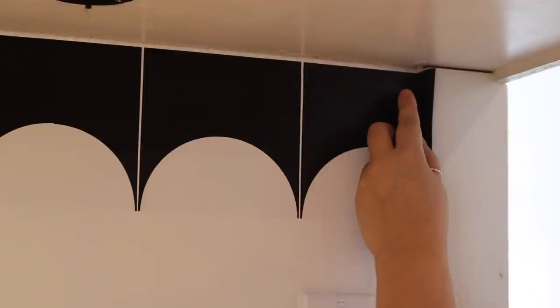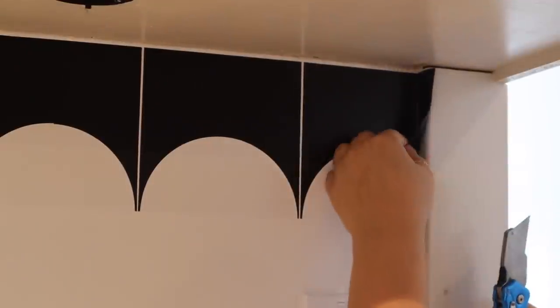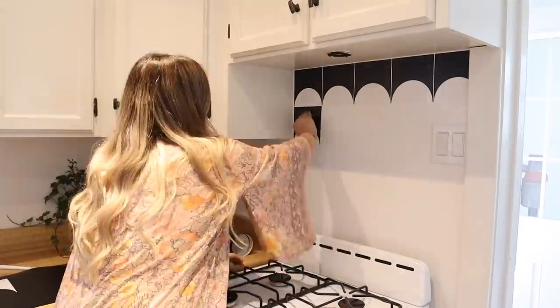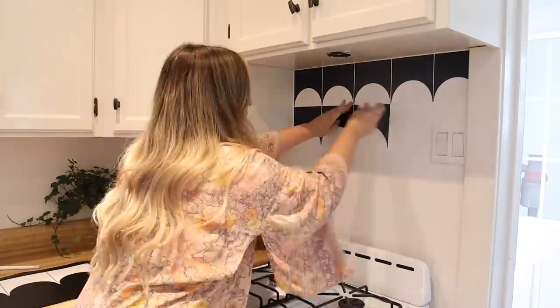If you get to a spot where you have too much tile, just take an exacto knife and cut off the excess. It's really as simple as that. That's what's so nice about vinyl—because it's so thin, it's very easy to cut.